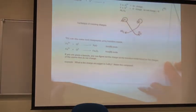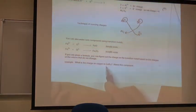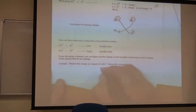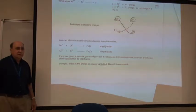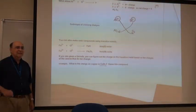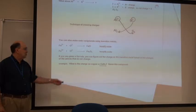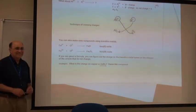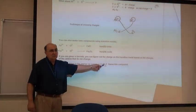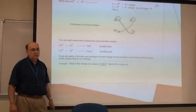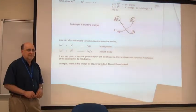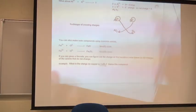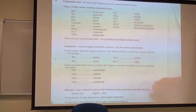What is the charge on copper in CuBr2? What's the charge on the copper? Plus two. Or two plus. And how do you know? Because it took two bromides, and bromide is always minus one. It took two of them.